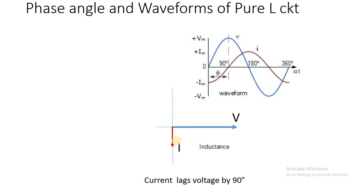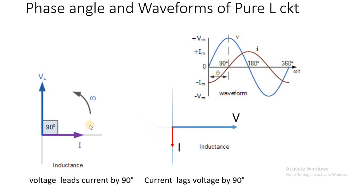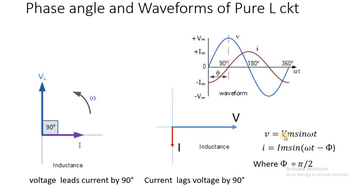If we take current as a reference, then the voltage will move 90 degrees anticlockwise, giving the comment that voltage is leading current by 90 degrees. In an inductor, if the voltage is at reference, we say current lags voltage by 90 degrees. If the current is at reference, we say voltage leads current by 90 degrees. The equations are V equal to Vm sin omega t, and current I equal to Im sin omega t minus phi, where phi equals pi by 2.